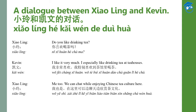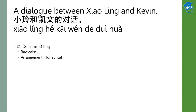Let's pause the conversation for now and look at the individual sentences, as we have some vocabulary we need to learn. First, let's look at the title. The title is a dialogue between Xiaolin and Kevin. In Mandarin, it is 小林和凯文的对话. There is only one new word here, which is 林.